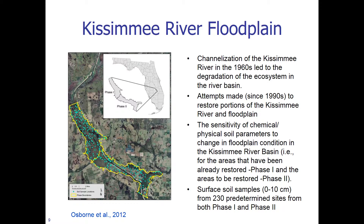We move on to look at the Kissimmee River floodplain. The channelization of the Kissimmee River in the 1960s led to the degradation of the ecosystem in the river basin. Attempts have since the 1990s been made to restore portions of the Kissimmee River and floodplain. The sensitivity of chemical and physical soil parameters to changes in floodplain condition was examined, covering areas already restored — Phase 1 — and areas to be restored — Phase 2 — with surface soil samples from 0 to 10 cm taken from 230 predetermined sites. Note this work was done around 2011–2012.